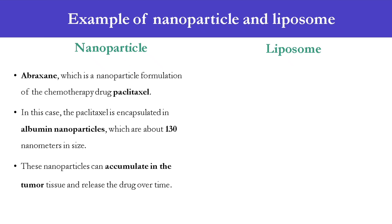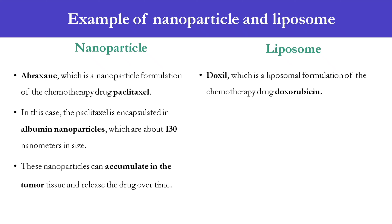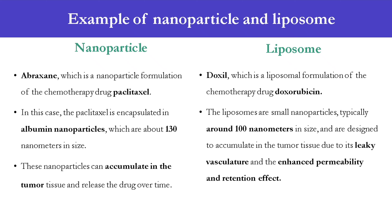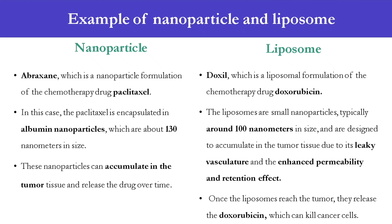The second example is liposome: Doxyl, which is a liposomal formulation of the chemotherapy drug doxorubicin. The liposomes are small nanoparticles, typically around 100 nanometers in size, and are designed to accumulate in the tumor tissue due to its leaky vasculature and the enhanced permeability and retention effect (EPR). Once the liposomes reach the tumor, they release the doxorubicin, which can kill cancer cells.